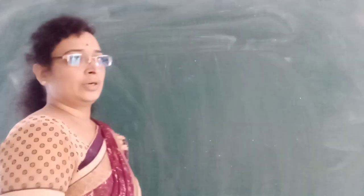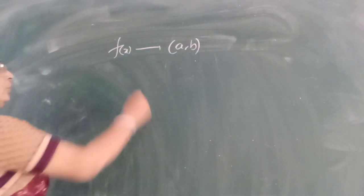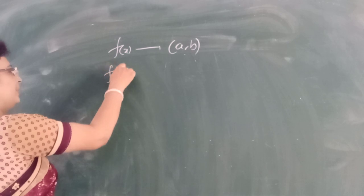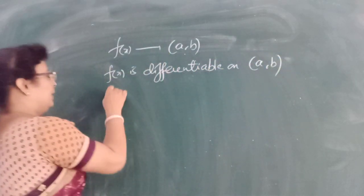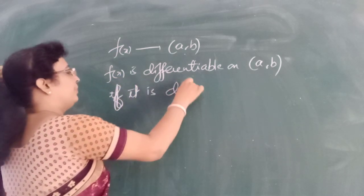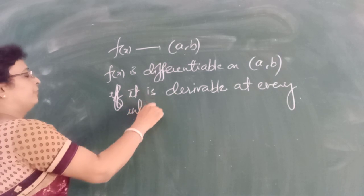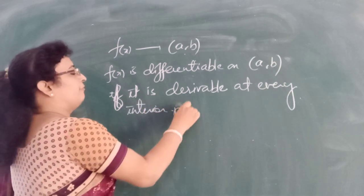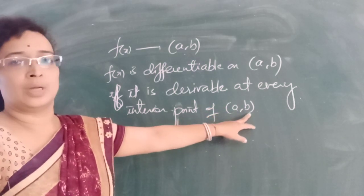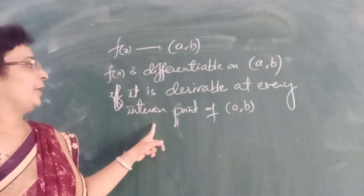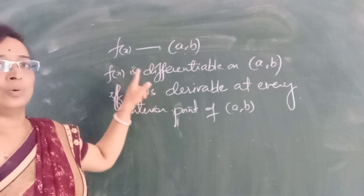The next thing is: how to check whether a function is differentiable on an open interval or closed interval. If a function f(x) is defined on an open interval (a, b), then f(x) is differentiable on the open interval (a, b) if and only if it is derivable at every interior point of this open interval (a, b). If f(x) is derivable at every point of the open interval, then we say the function is differentiable on (a, b).